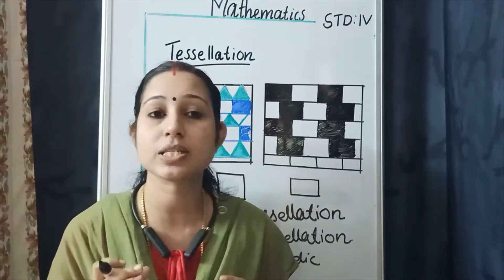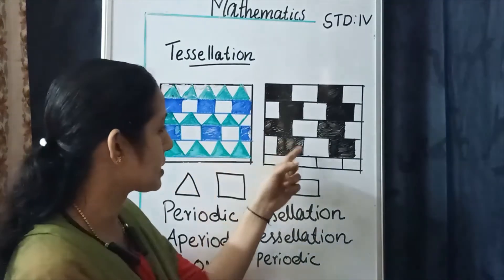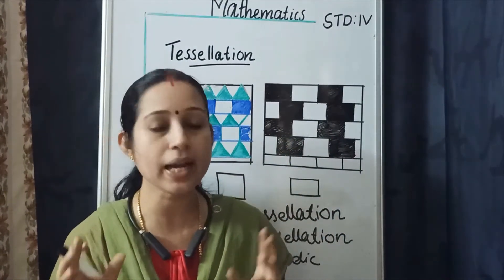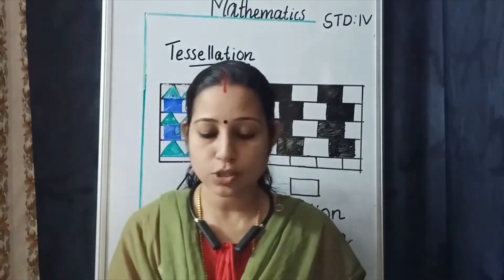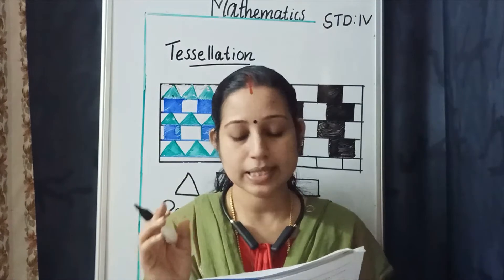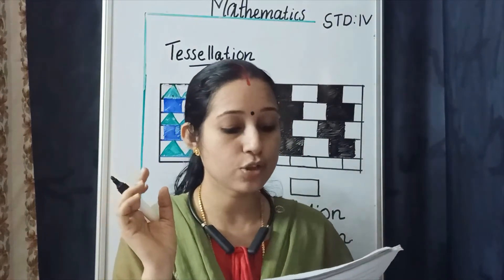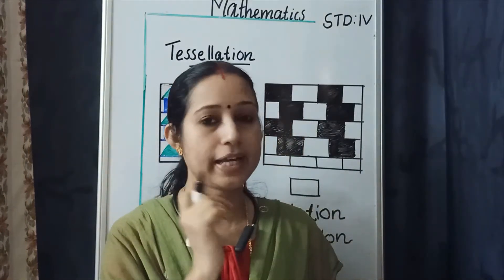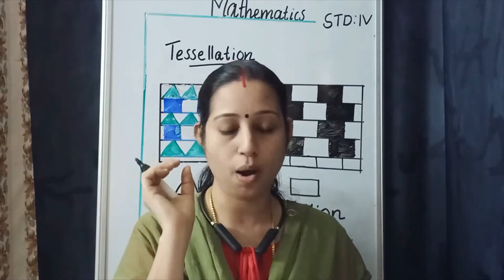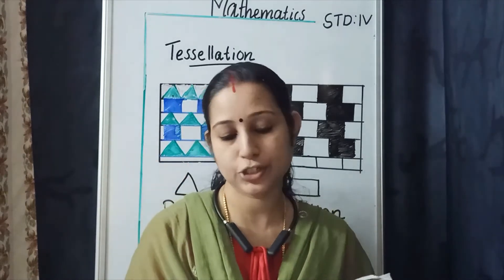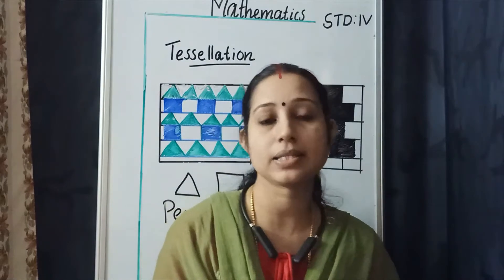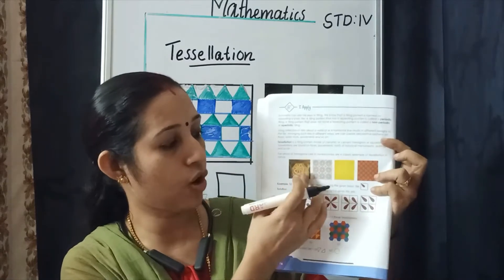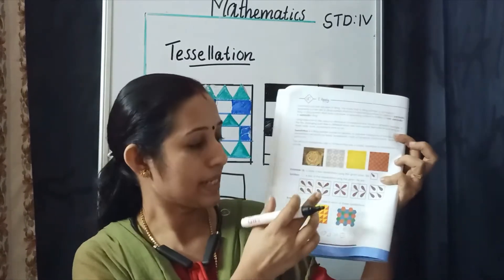All periodic tessellations are symmetrical figures. Many examples are given in the textbook. Arrays of hexagonal cells in a honeycomb are a very good example of tessellation in nature. A honeycomb is a classic example of a tessellation. These are all examples of periodic tessellation.